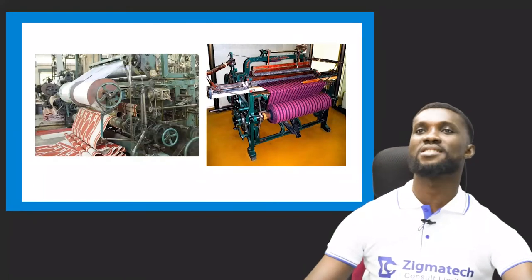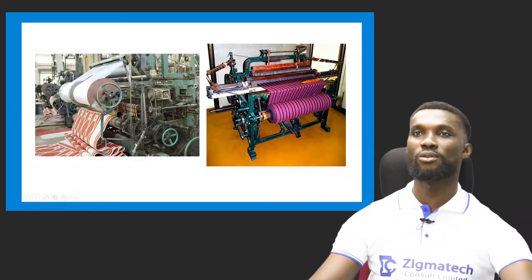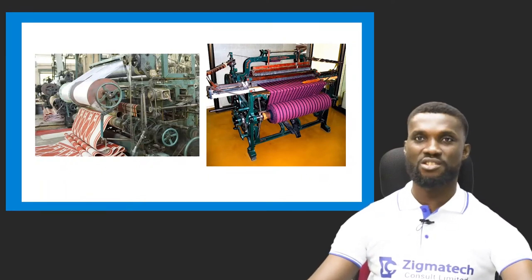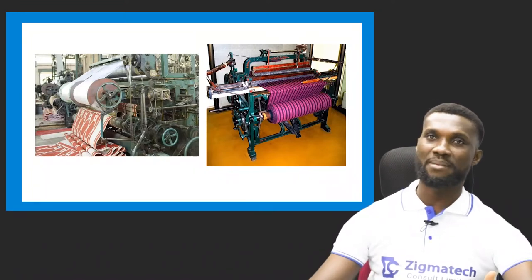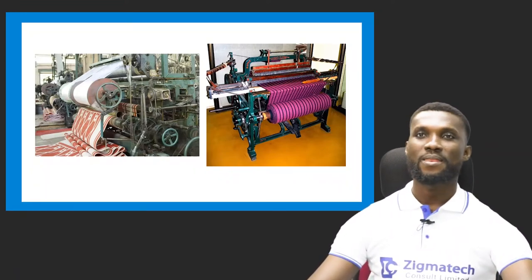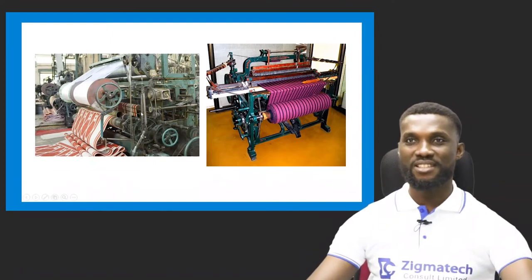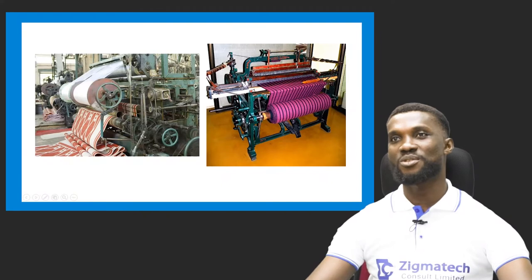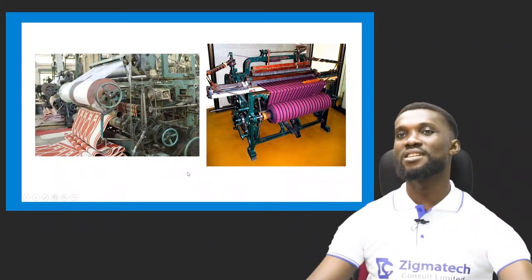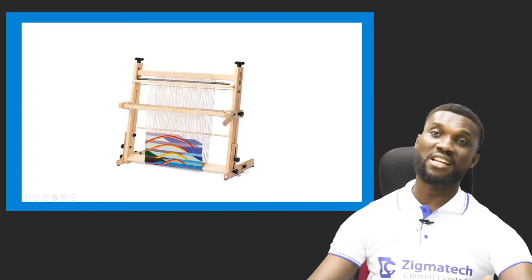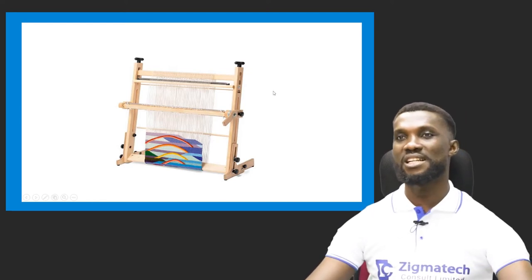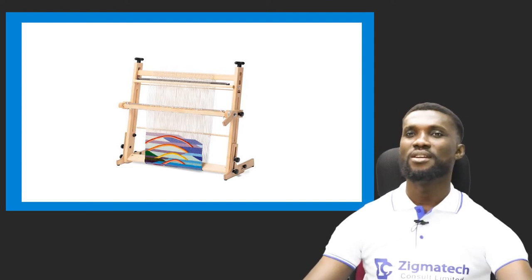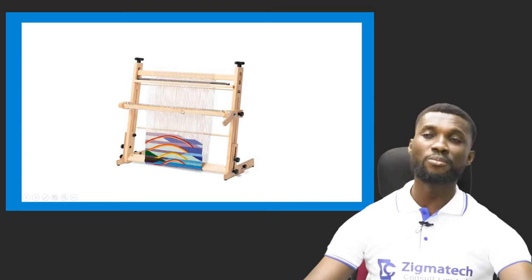Now let's look at pictures of the looms. This is an industrial loom — it is mechanical, controlled by electricity or a generator. This is the warp, and the weft is passed through it. The shuttle holds the weft that goes through the warp. Now here is the local loom — this is the perfect example of how it looks. You can tell the carpenter to create this for you. The loom is a tool for weaving fabrics.